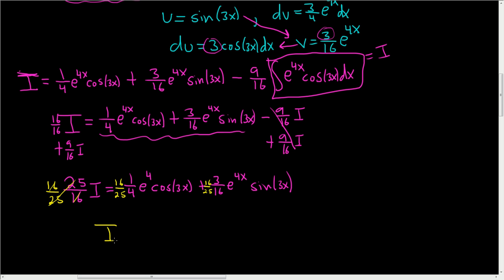So I is equal to, let's see, 4 goes into 16 four times. So, ooh, I lost my x there. So this is 4, so easy to mess up, 4 over 25, then we get e to the 4x cosine of 3x. And then here the 16s cancel, so we get plus 3 over 25 e to the 4x, then we have the sine 3x.